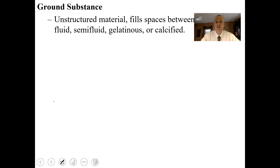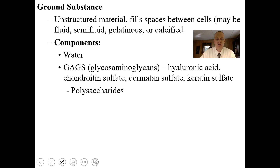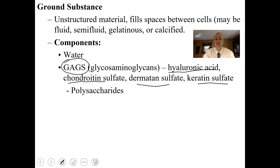Ground substance is unstructured material that fills spaces between cells. It may be fluid, semi-fluid, gelatinous, or even calcified, as in bone. One of the large components of ground substance is typically water. You can also find various kinds of glycosaminoglycans, or GAGs for short. These GAGs can range anywhere from hyaluronic acid, chondroitin sulfate, dermatan sulfate, to keratan sulfate.